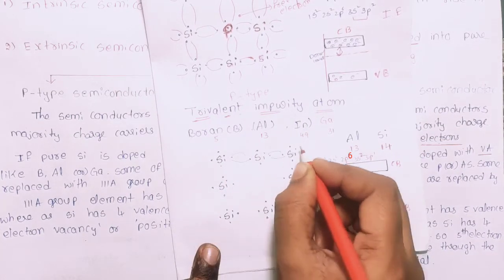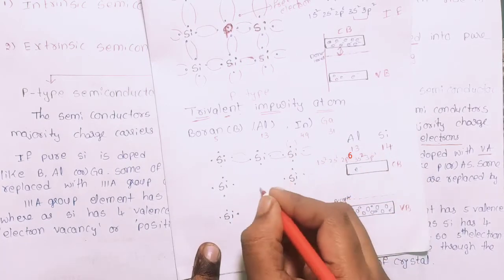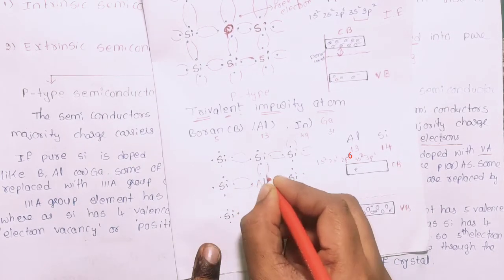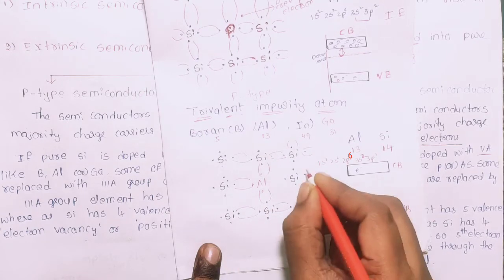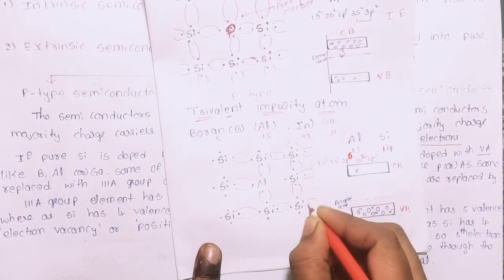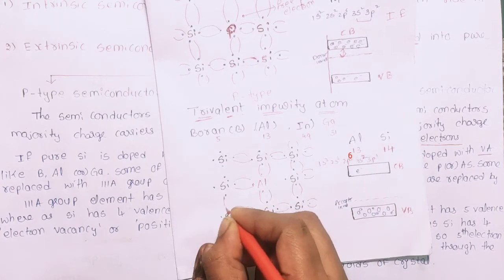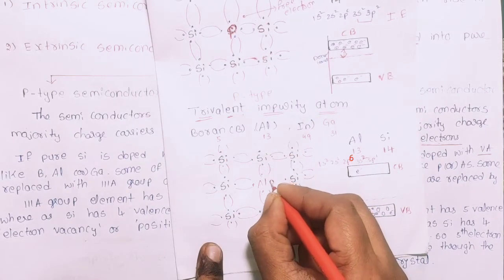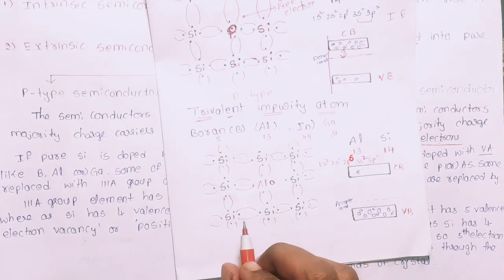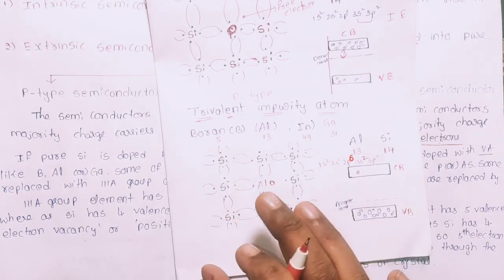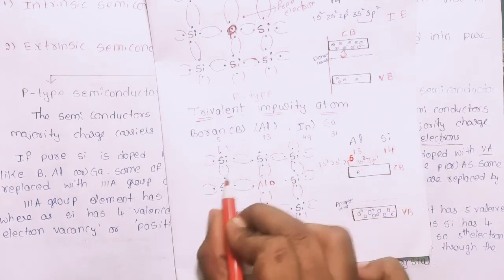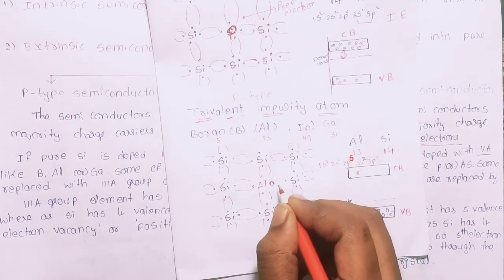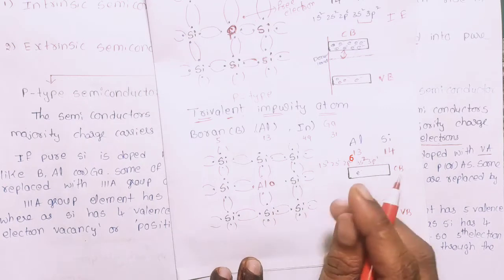Aluminum has electronic configuration 2s2, 2p6, 3s2, 3p1 — giving 3 valence electrons. Silicon has 4 valence electrons. When aluminum is doped into silicon, aluminum forms bonds with the neighboring silicon atoms using its 3 electrons, but there remains one incomplete bond — a vacancy — because aluminum has one fewer electron than needed.